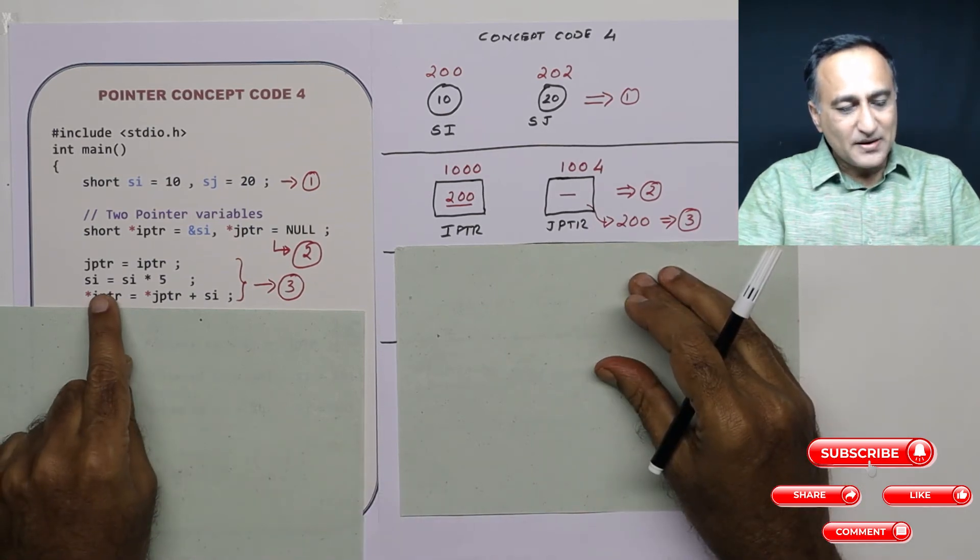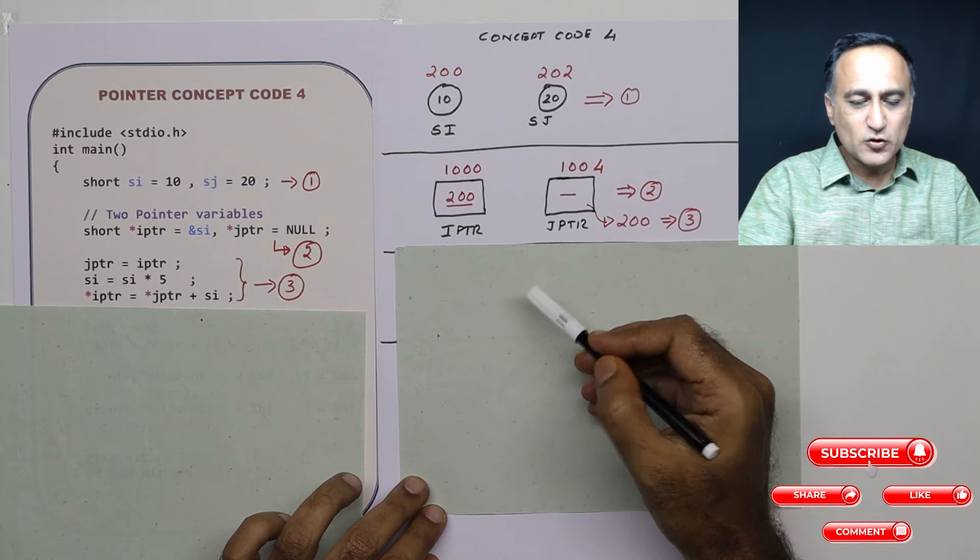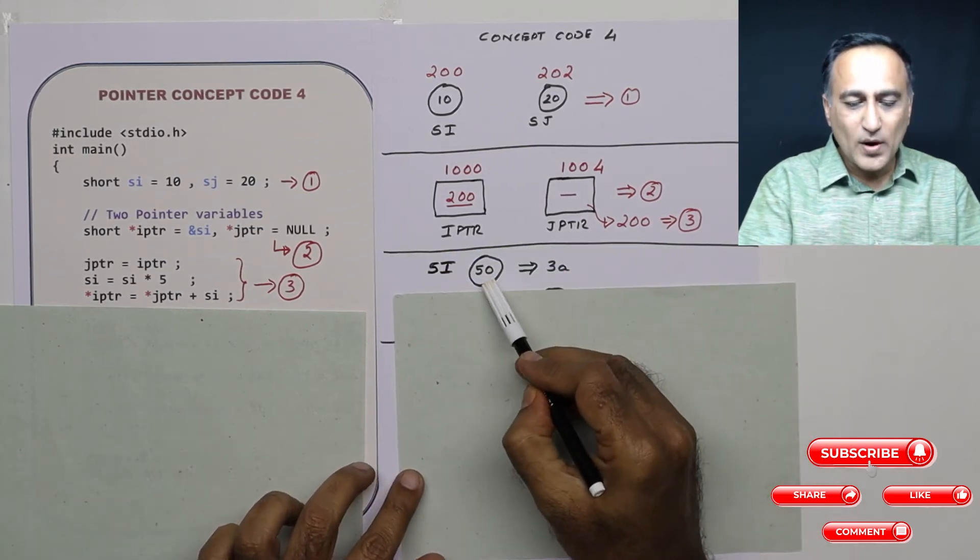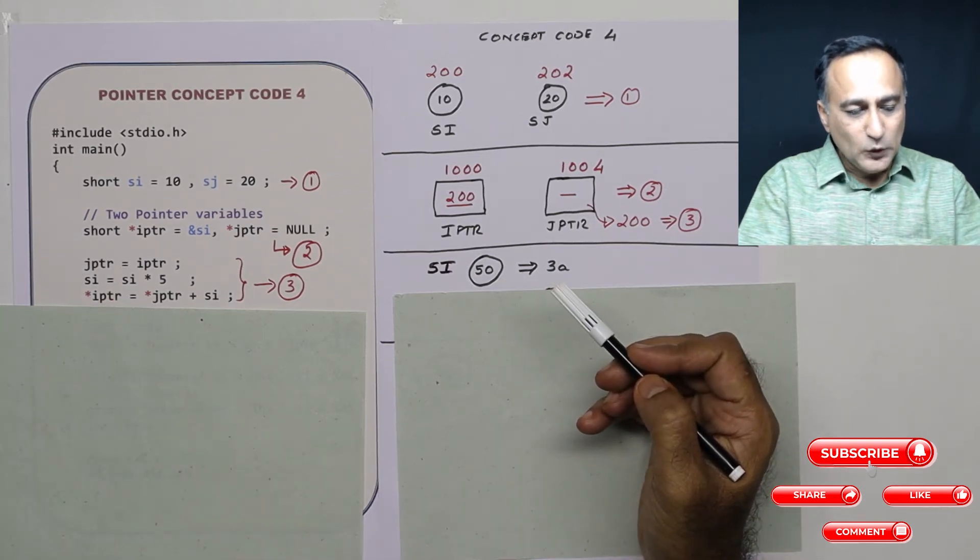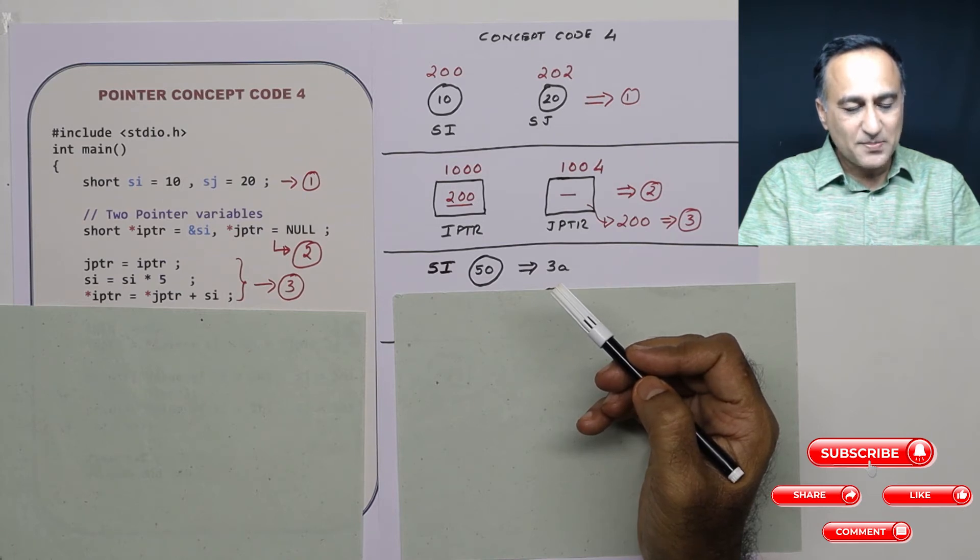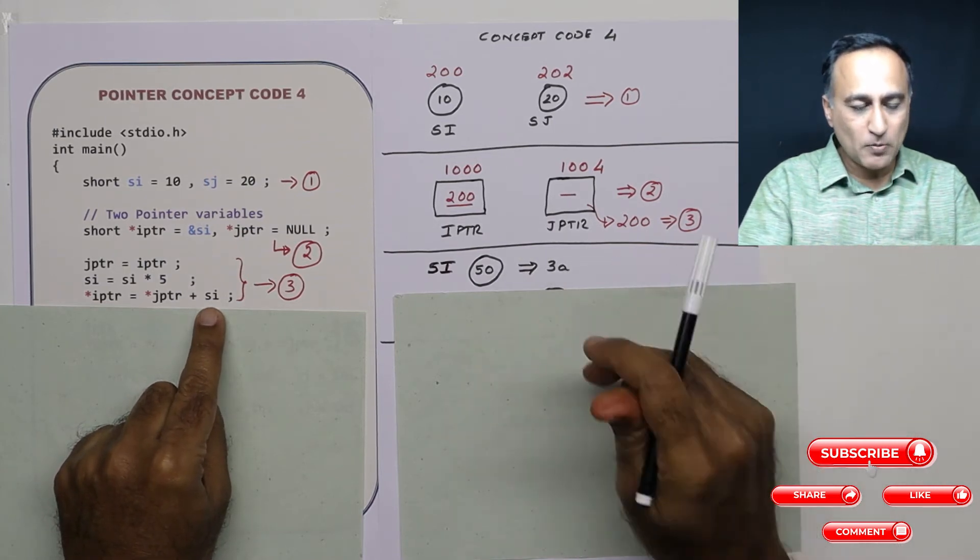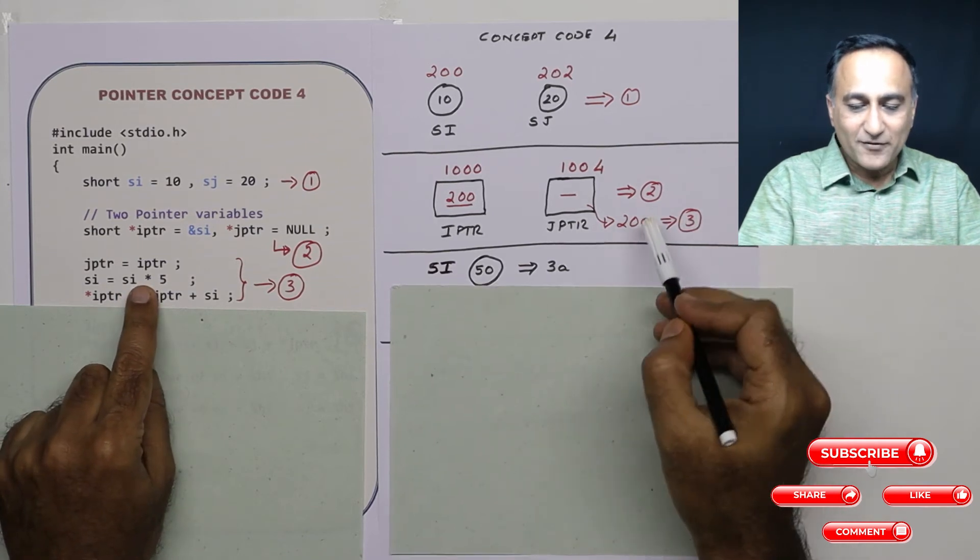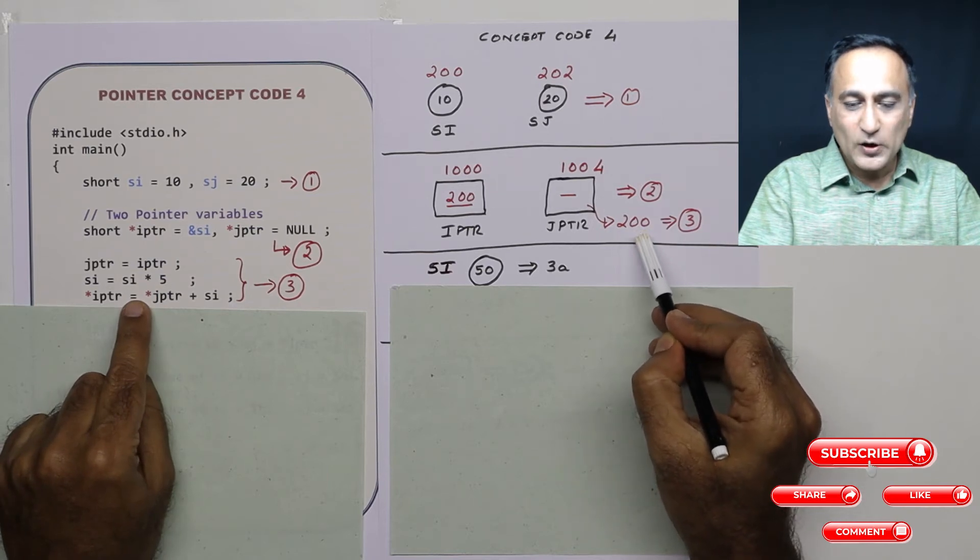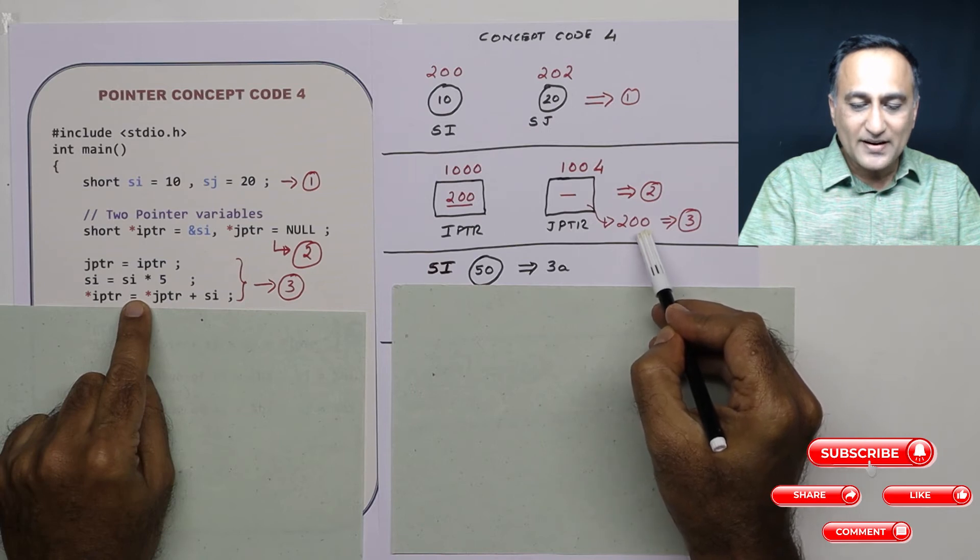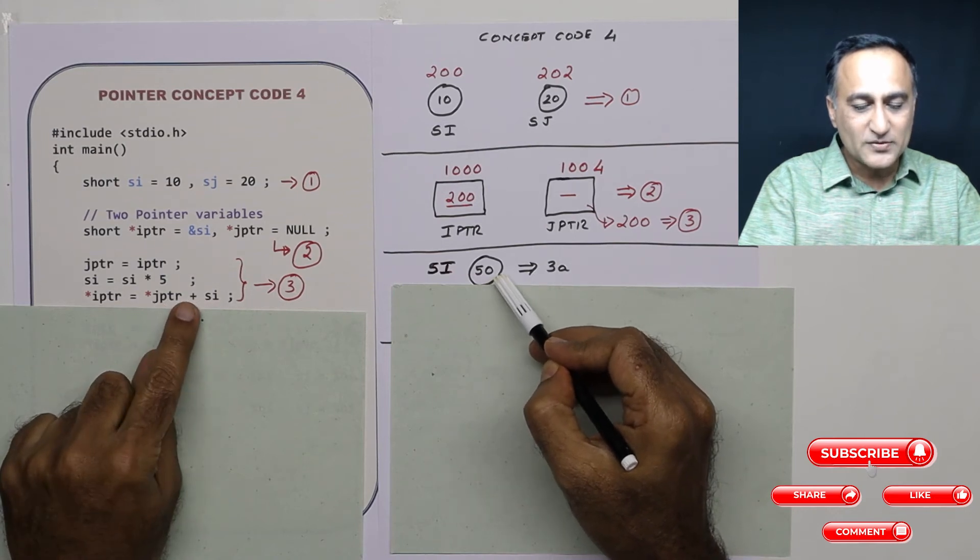Now what I am doing is I am taking SI and multiplying it by 5. So 10 into 5 SI should end up becoming 50. So here the new value of SI is 50 at this particular step. Now look at star IPTR is assigned the value star JPTR plus SI. Let's go with SI first. SI simply refers to 50. JPTR refers to what address 200. Star means what is the content or value at address 200. Content or value at address 200 is now 50. So this is 50. This is 50. 50 plus 50 is 100.